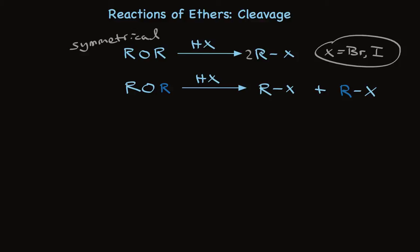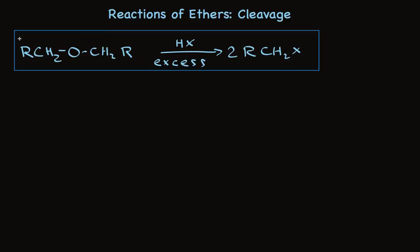How can we rationalize this reaction? Let's take a quick look at the mechanism. I've written an ether here that has primary alkyl groups, and that's important. Oxygen has two lone pairs of electrons, and in the presence of strong acid, that ether oxygen is protonated.